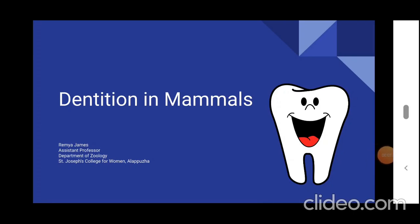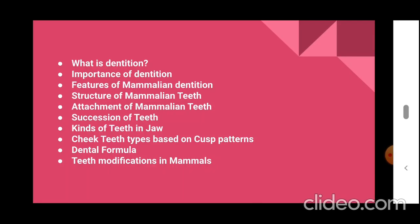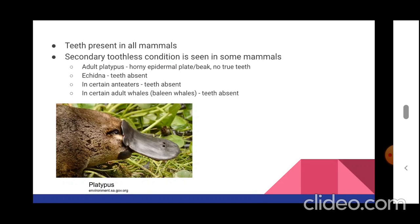Hey students, this is part 3 of the lecture on dentition in mammals. In this session we will be discussing attachment of mammalian teeth, succession of teeth, and kinds of teeth in the jaw. Aspects such as what is dentition, importance of dentition, features of mammalian dentition, and the structure of mammalian teeth were discussed in part 1 and part 2.